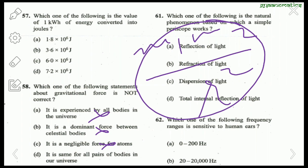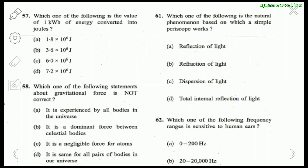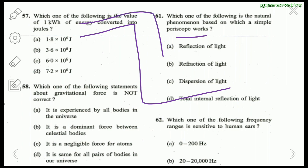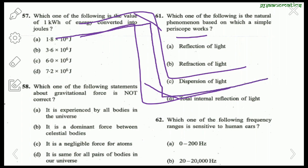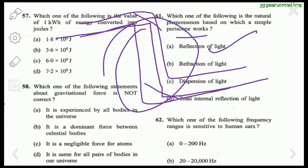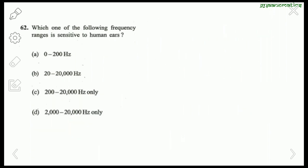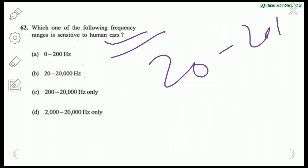Question 61: Which natural phenomenon is a simple periscope based on? The periscope is Z-shaped with two mirrors placed at 45 degrees. When light comes in, it reflects 90 degrees and then reflects again — this is simple reflection of light. Answer is A. Question 60: The frequency range sensitive to human ears is 20 to 20,000 Hz. Answer is B.